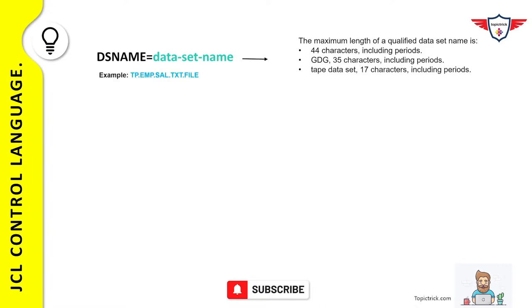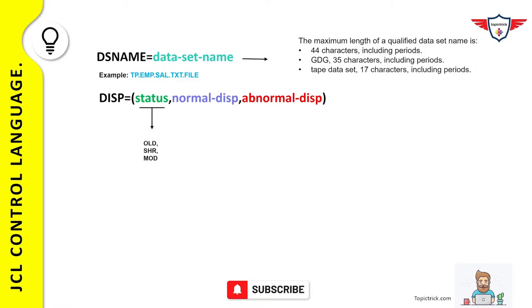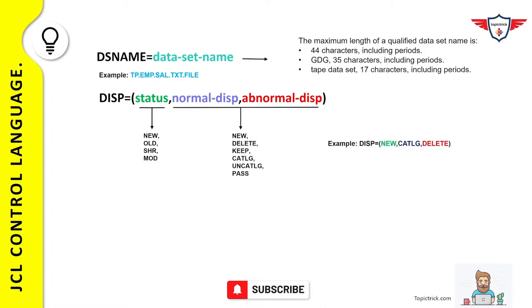For example, TP.EMP.SAL.TXT.FILE is the actual name of a data set created on mainframe — an employee salary file for a particular month.